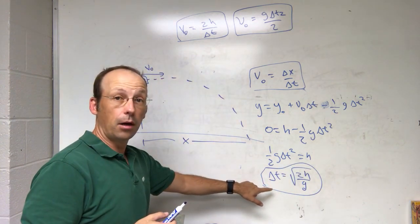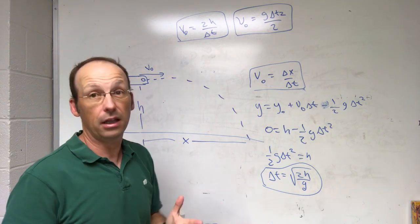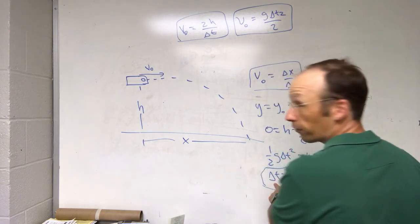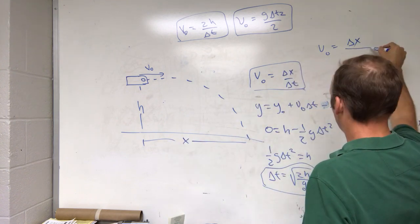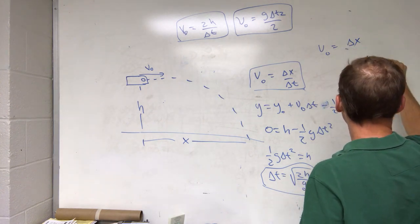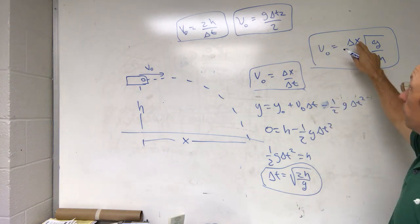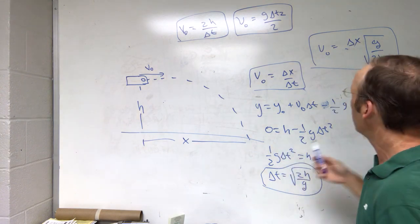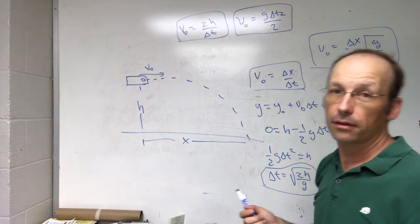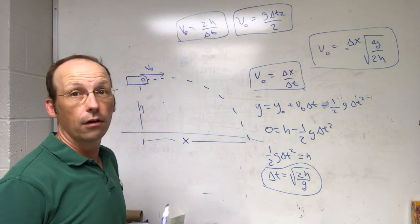Instead of timing with a stopwatch, I measure the height h, calculate the time, and substitute into v0 = delta-x / delta-t. This gives v0 equals delta-x times the square root of g over 2h. Units check: meters times sqrt(m/s² / m) = meters times 1/s = meters per second. So those are four different ways to calculate the launch velocity, and there may be other tricks to measure times or heights, but those are the four basic methods.